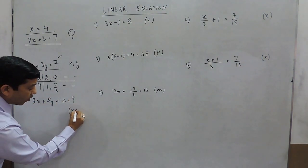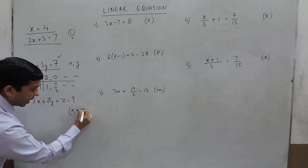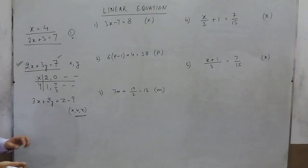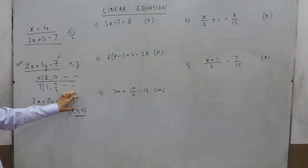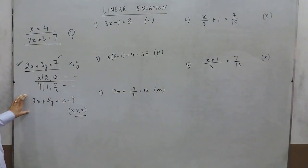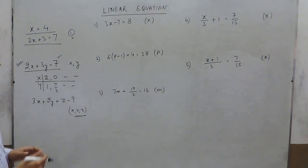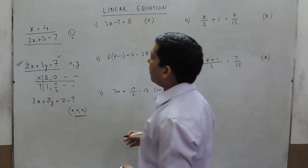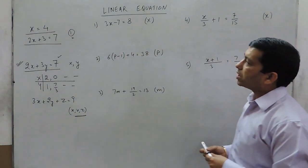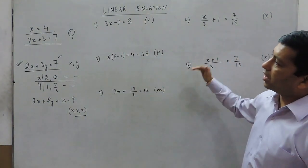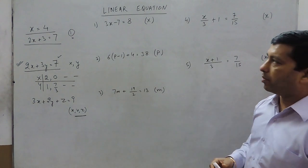So 3x plus 2y plus z equals 9 is the linear equation having three variables. Today we are discussing the solutions of linear equations with a single variable.